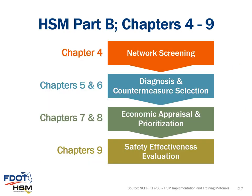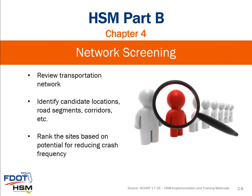Focusing on Part B and the nine different chapters, you can see how they flow from Chapter 4 through Chapter 9 — network screening, diagnosis, countermeasure selection, economic appraisal, prioritization, and effectiveness evaluation. It is really a step-by-step process within the safety management process, and we'll talk about each of those in a little greater detail.